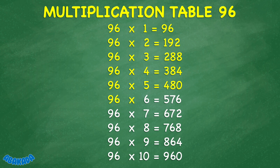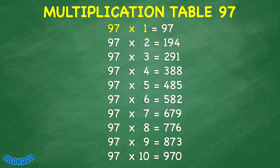96 times 6 equals 576. 96 times 7 equals 672. 96 times 8 equals 768. 96 times 9 equals 864. 96 times 10 equals 960. 97 times 1 equals 97. 97 times 2 equals 194. 97 times 3 equals 291.